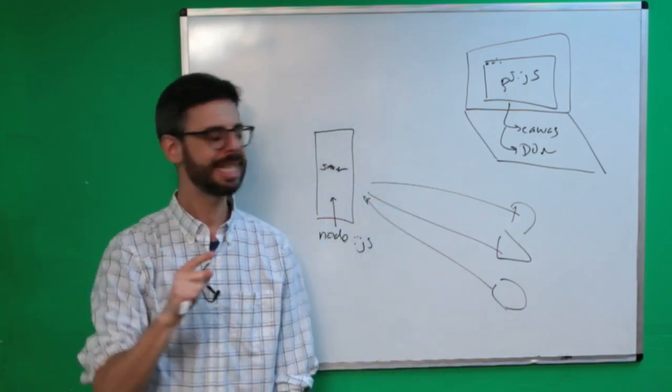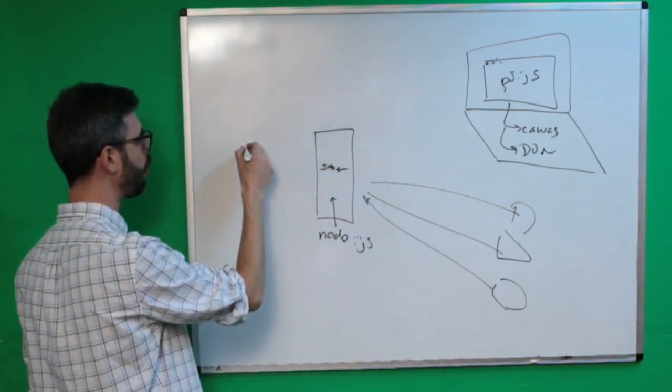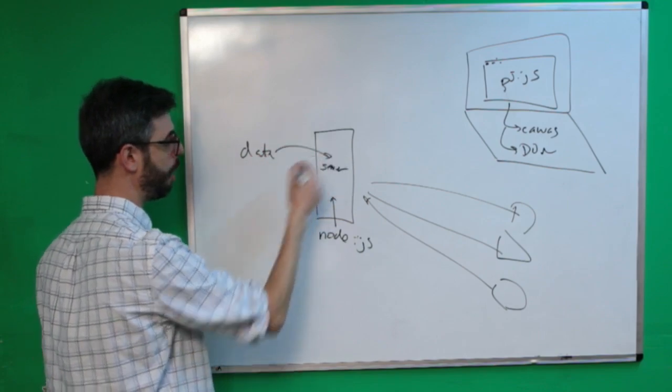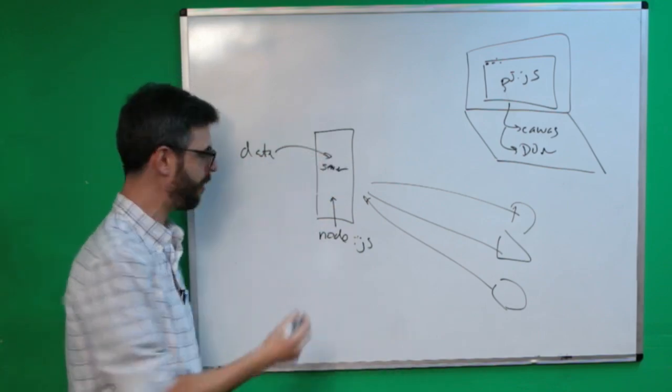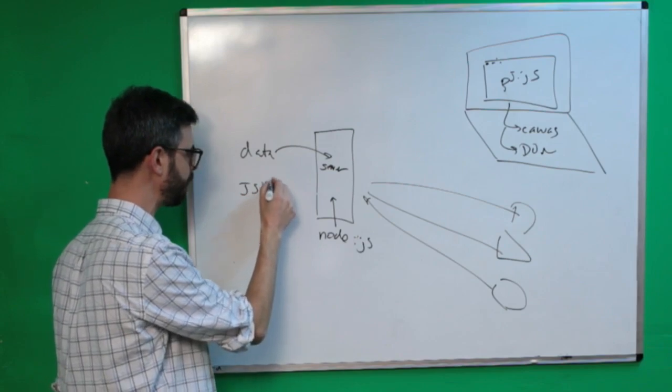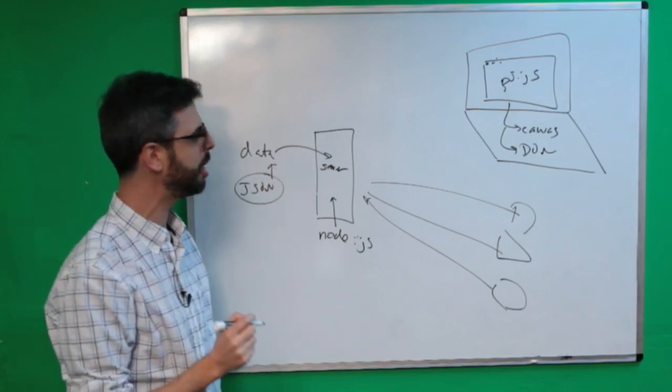Now one of the things I explored is that on the server you could store data. One of the examples I made just writes data to a local text file, a JSON - JavaScript Object Notation - text file that sits here.